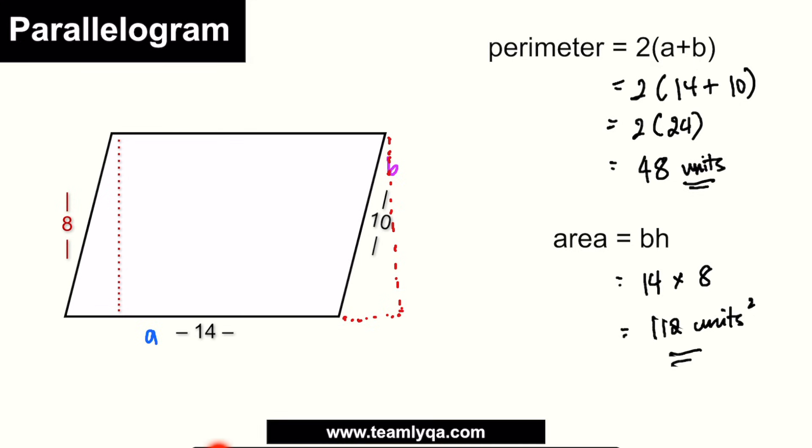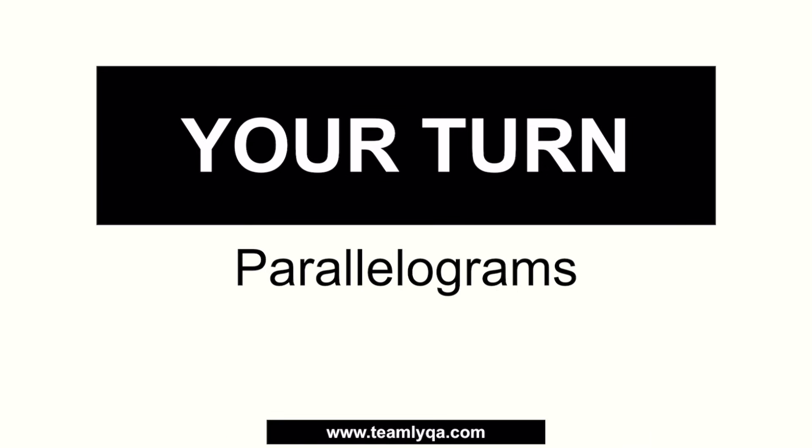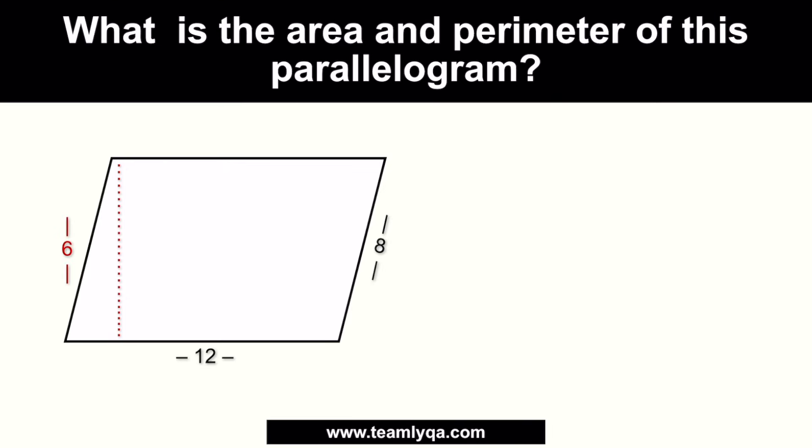So again, anong mga problem points dito? Bakit nagkakamali yung iba? Nagkakamali minsan sa grouping, nagkakamali minsan sa pagspot kung alin ang height versus yung isang side niya. So yun yung mga bagay na kailangan pag-ingatan. Now, for you to gauge kung naintindihan niyo talaga yung lesson, we're going to jump into a quick quiz. All you're going to have to do is solve yung perimeter at area nitong parallelogram that I will give you. If you're ready with your pen and paper, your timer starts now.